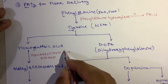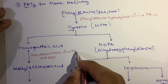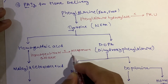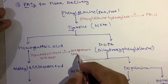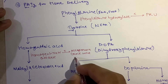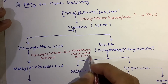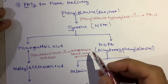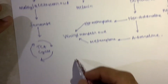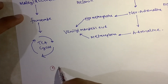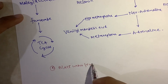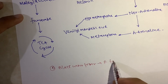Homogentisic acid gets converted into maleylacetoacetic acid by the enzyme homogentisate oxidase. Absence of this enzyme results in a condition known as alkaptonuria, also known as black urine disease, because the color of urine turns black. There is also another condition where black urine occurs, known as blackwater fever, which is due to Plasmodium falciparum.